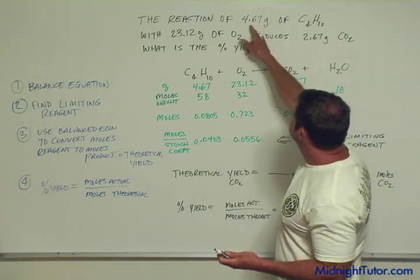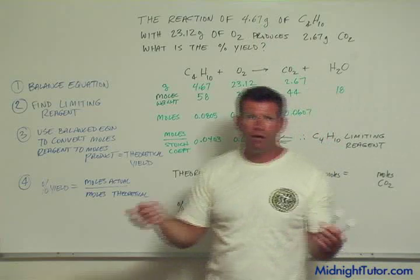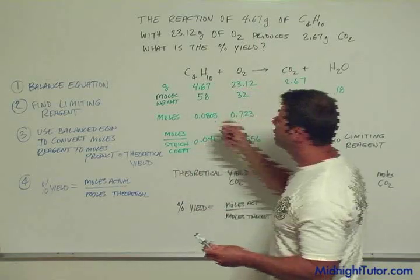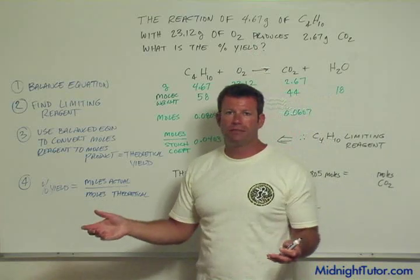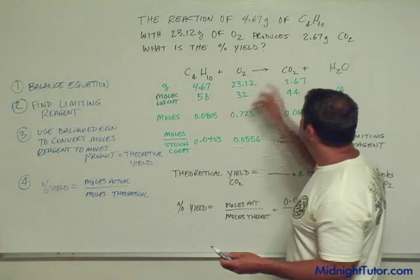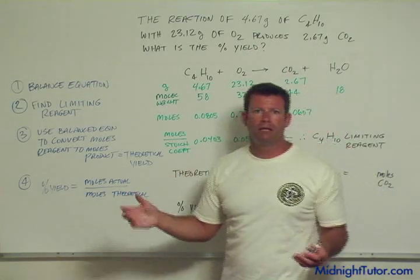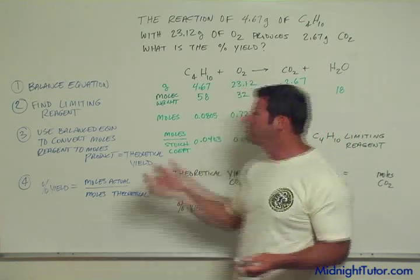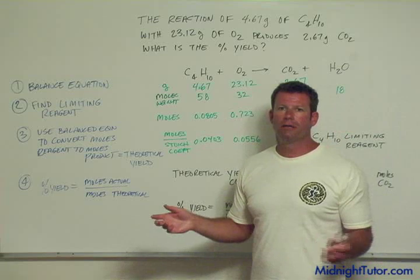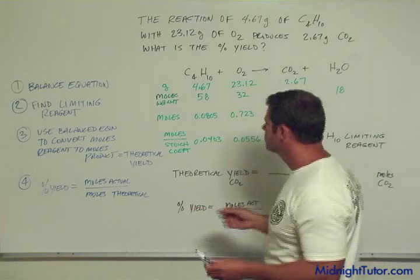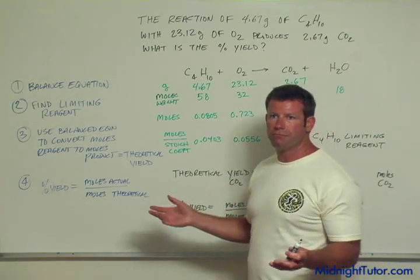Right, so we're given grams of material that we started with. So we measured out grams of reagents, and we put them in some vessel, and then ended up with a product that we were able to separate, and then we measured on a scale the product, and we got this. So the question is, what's the percent yield? How good were we with our experiment, with our experimental procedure?